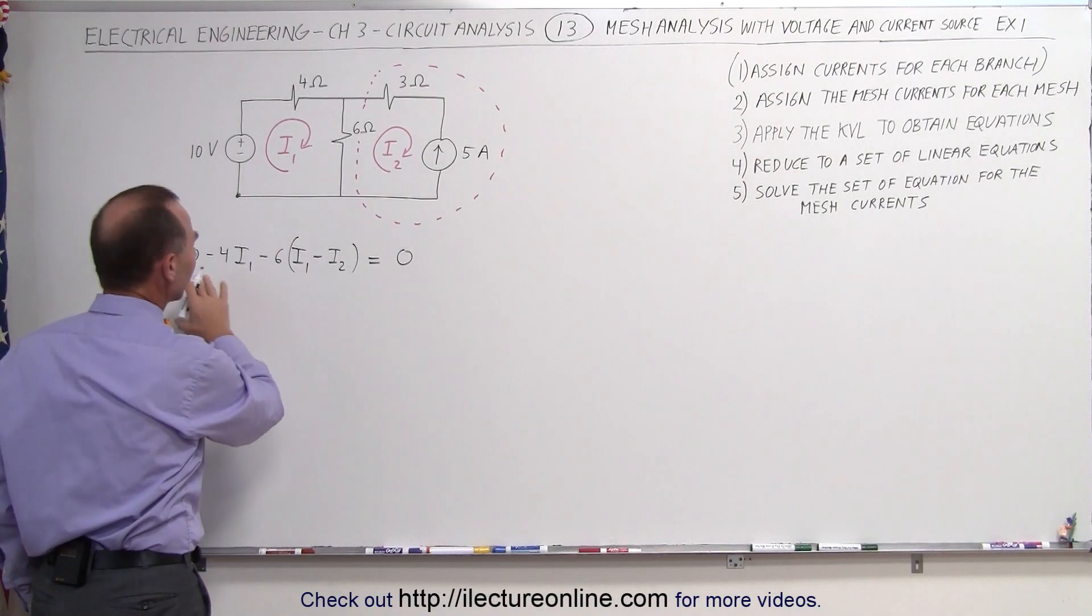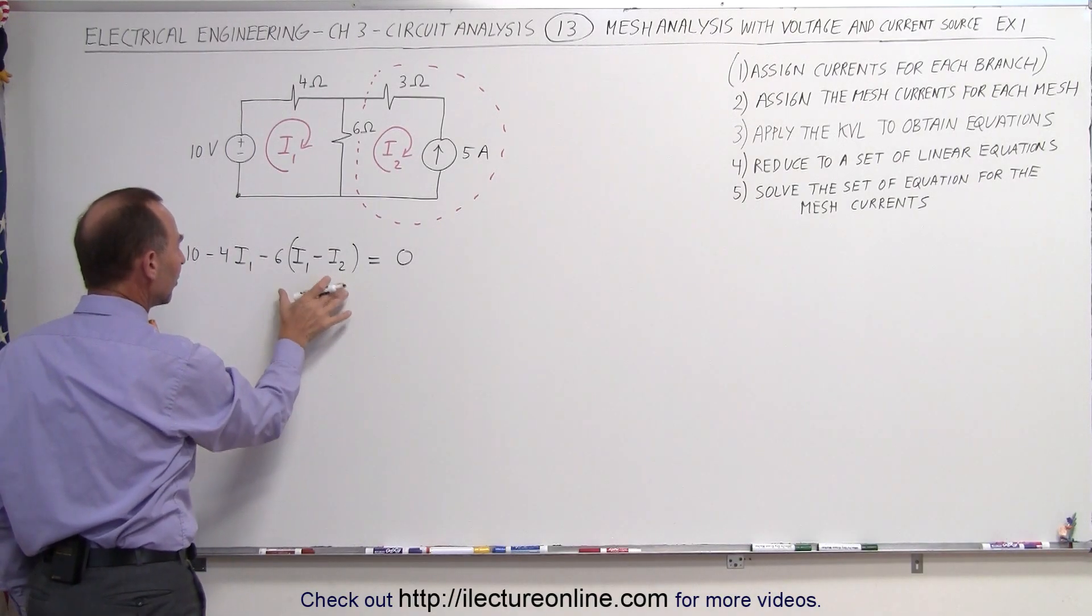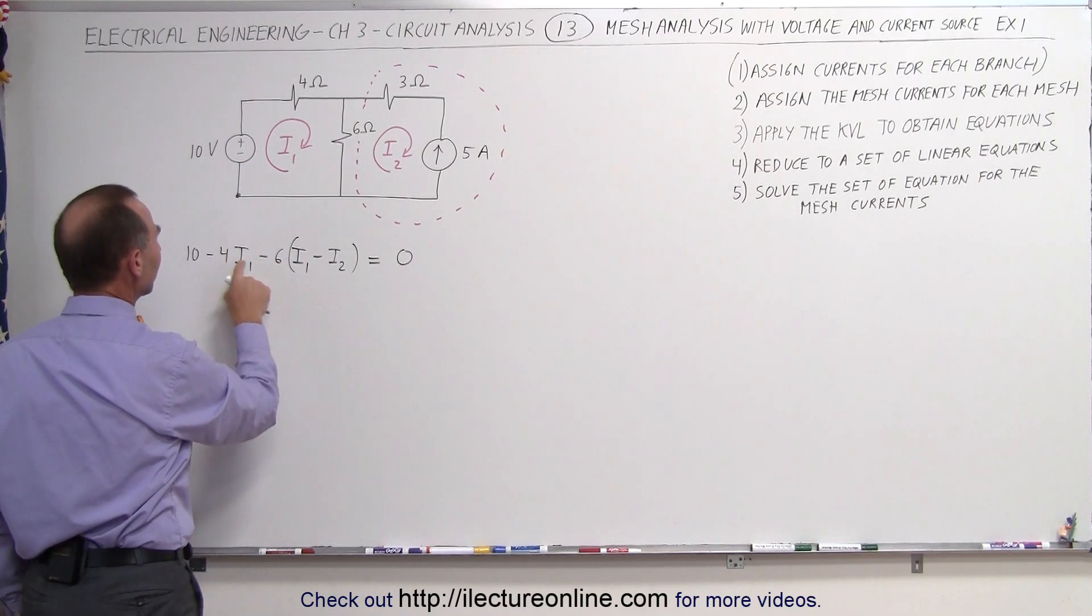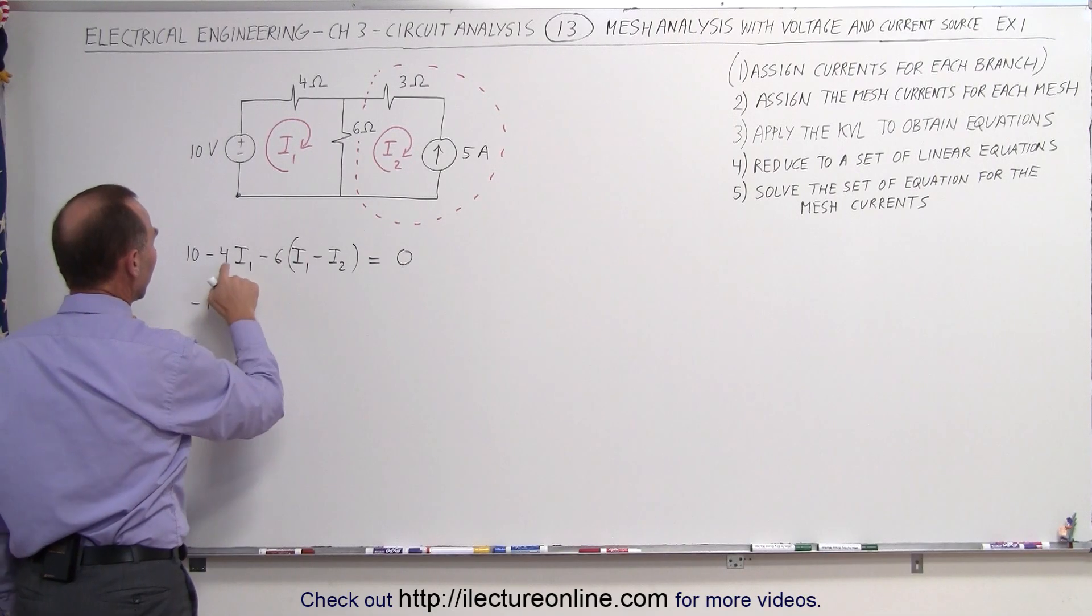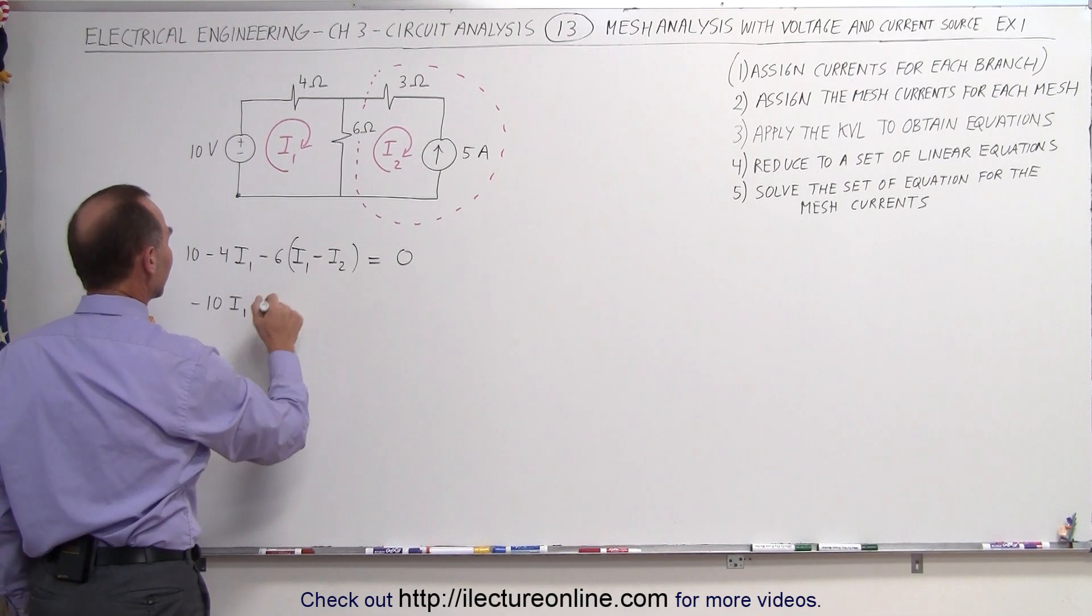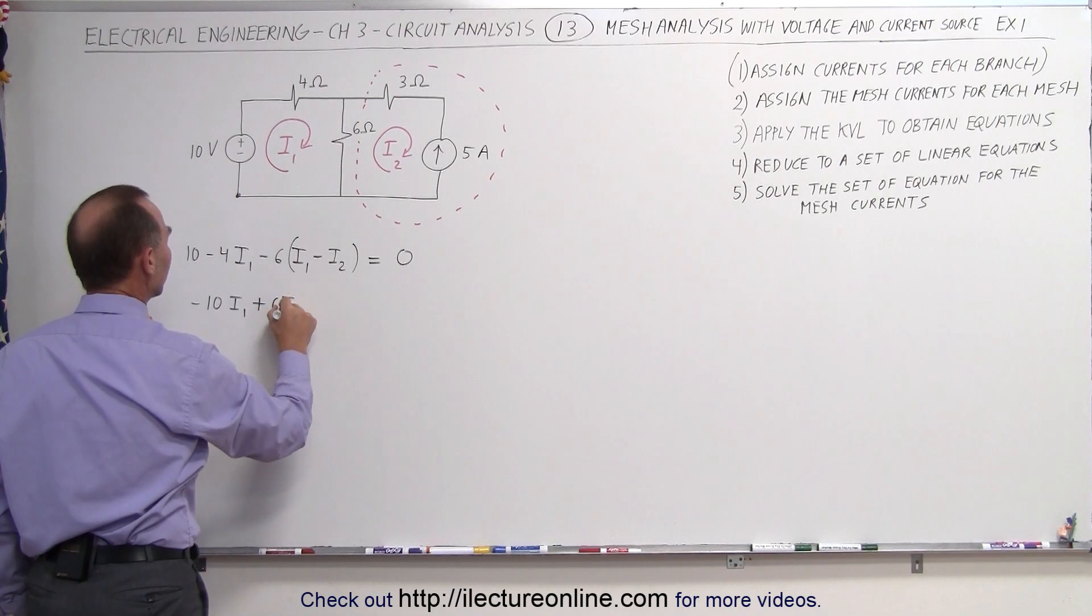If we solve for this equation, or at least write it into a simpler format with I1 and I2 only appearing once, we have minus 4 times minus 6, that's minus 10 I1. Minus 6 times this gives us a plus 6 I2.